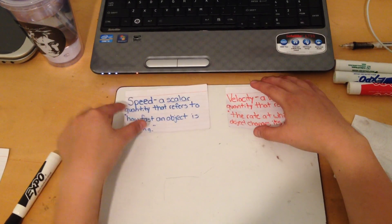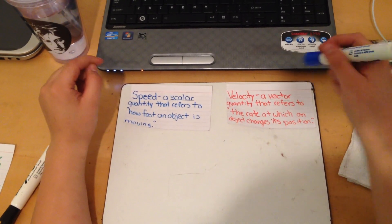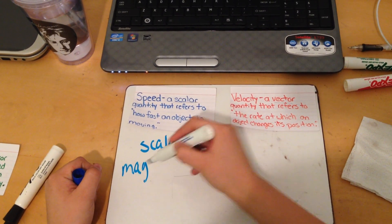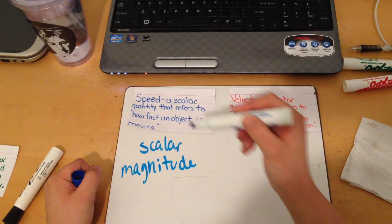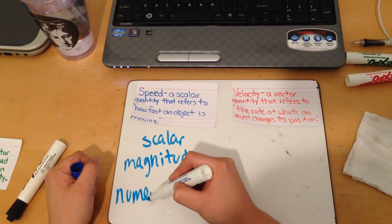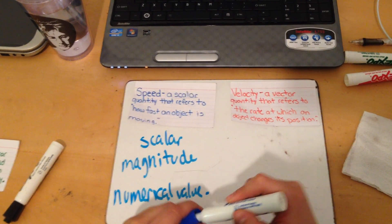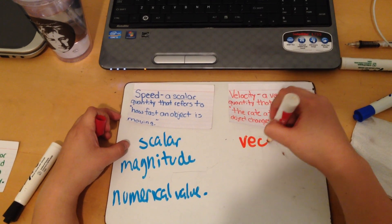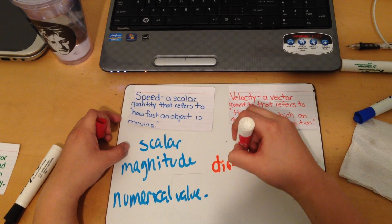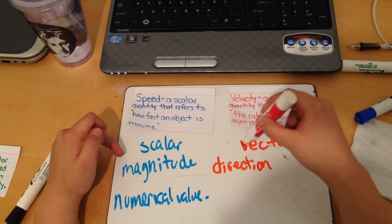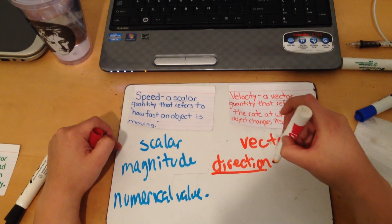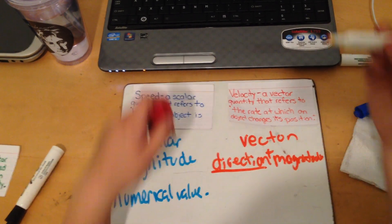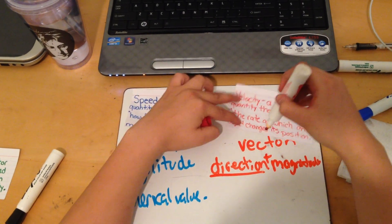Now we're going to compare speed and velocity. The definition for speed says it's a scalar quantity — scalar — and this means magnitude. Magnitude is just a numerical value. Velocity has the word vector quantity, so it's going to be vector, and vector is going to be direction, which is the difference between speed and velocity. Velocity has direction and magnitude.